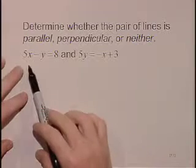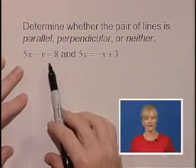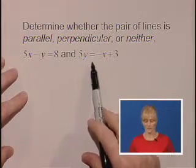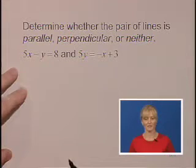Let's determine whether the pair of lines is parallel, perpendicular, or neither. 5x minus y equals 8, and 5y equals negative x plus 3.